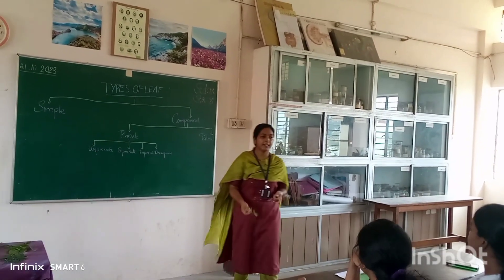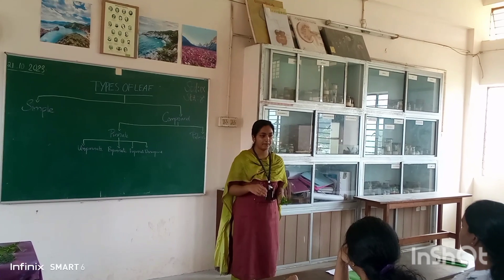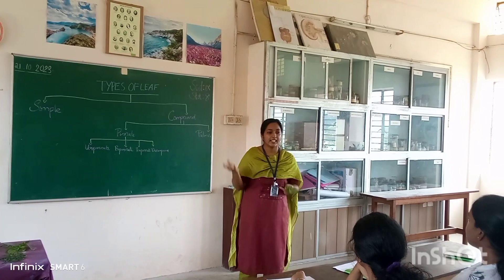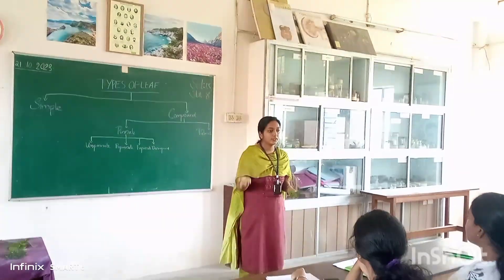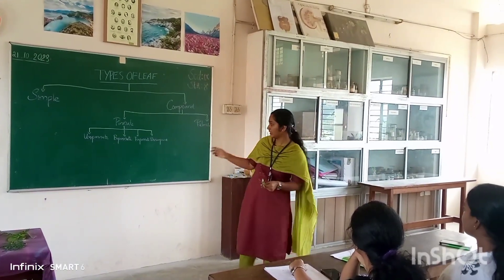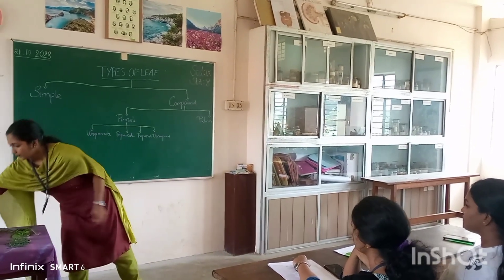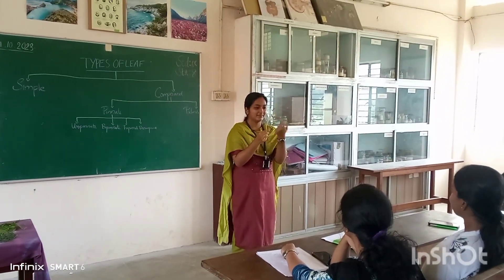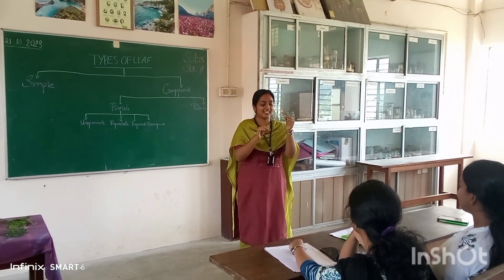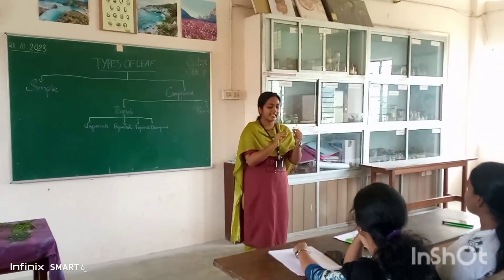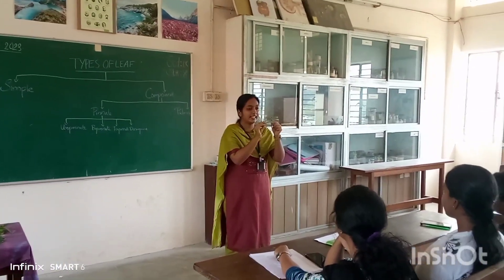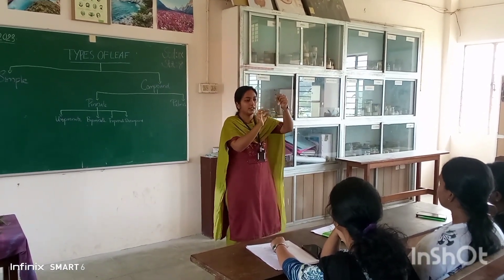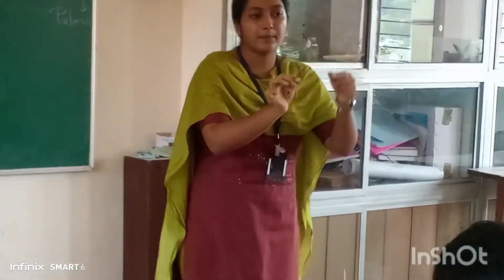Next is bipinnate. Bipinnate means there is a secondary axis, and the leaflets are produced from this secondary axis. For example, in Mimosa, there is a secondary axis and the secondary axis contains the leaflets, which are produced from the central axis. So that is bipinnate.